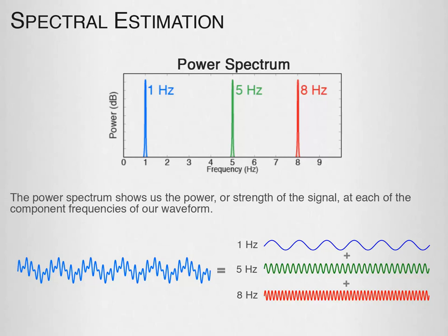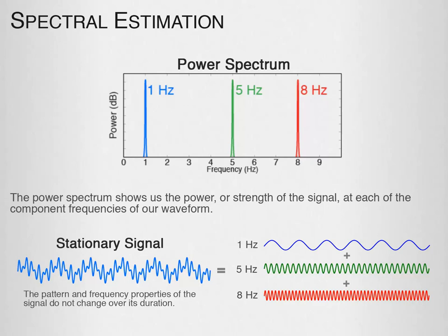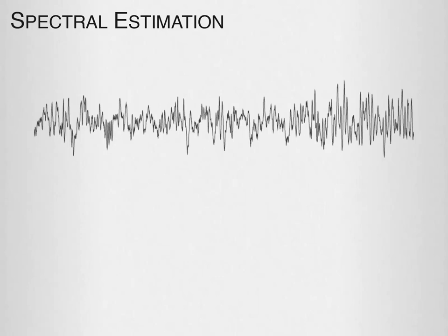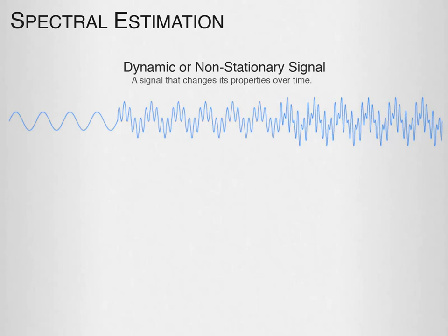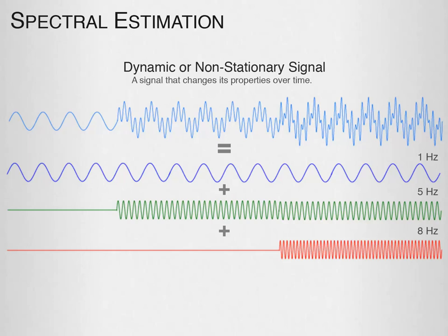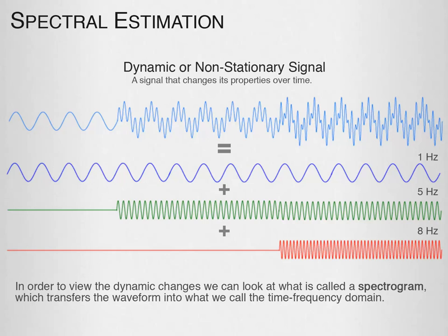When the pattern and frequency properties of a signal do not change over its duration, we categorize it as a stationary signal. However, when looking at brain signals, as the sleep state changes, the signal properties change — we call this a dynamic or non-stationary signal. For example, a signal still made up of 1, 5, and 8 Hz components but with those frequencies appearing at different times cannot be captured by a single power spectrum. To view those dynamic changes, we can look at what is called a spectrogram, which transforms the waveform into the time-frequency domain.